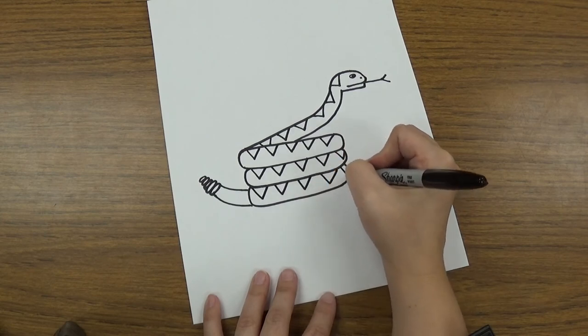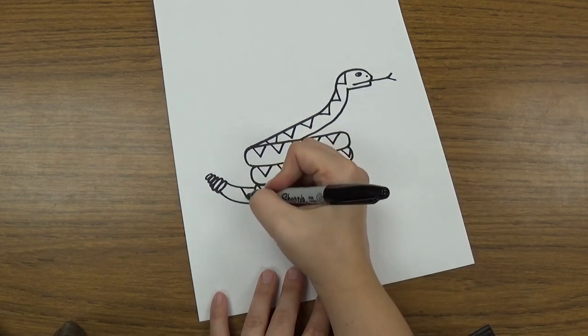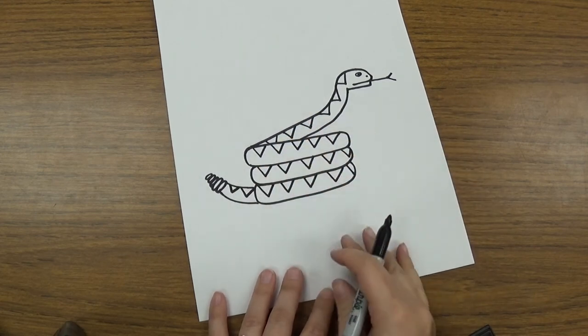Triangle, triangle, triangle, triangle shapes. That one cut off because he's going around the side. We'll do one on the top of his tail and it gets a little smaller at the end of his tail.